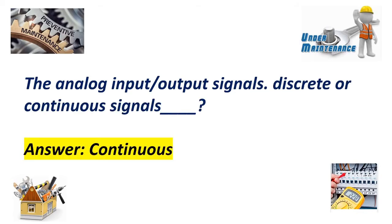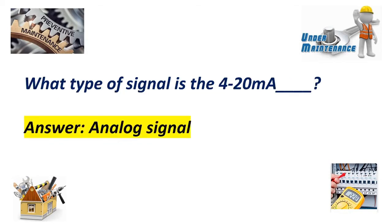The analog input-output signals: discrete or continuous signal? Answer: Continuous. What type of signal is the 4 to 20 milliampere? Answer: Analog signal.